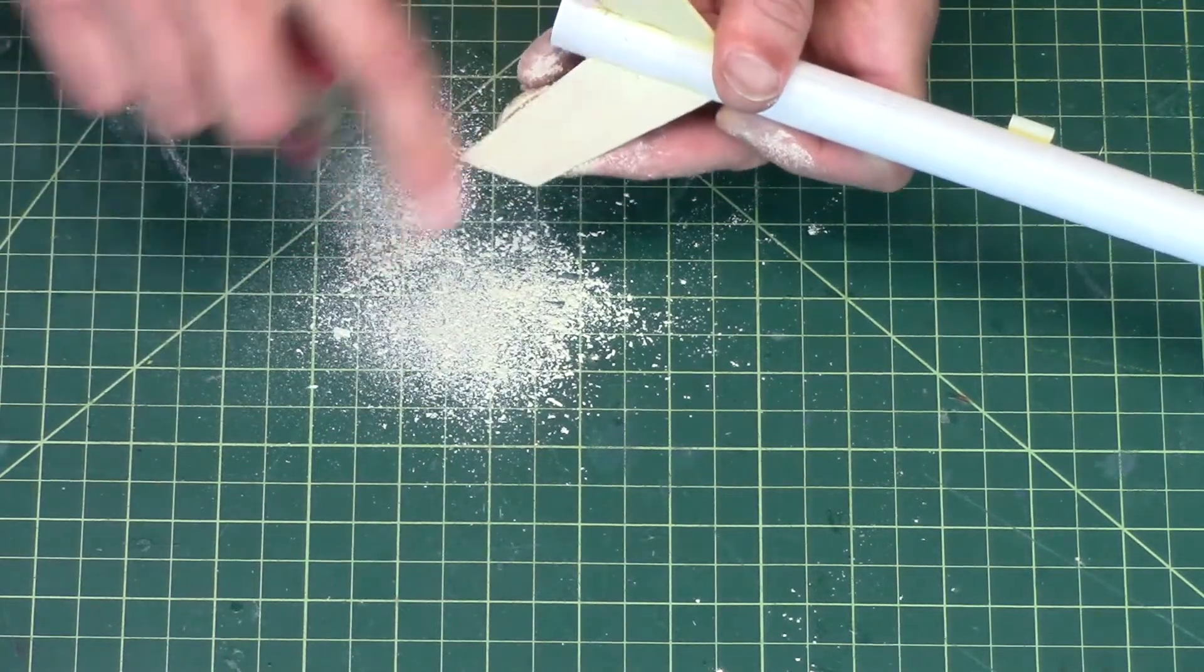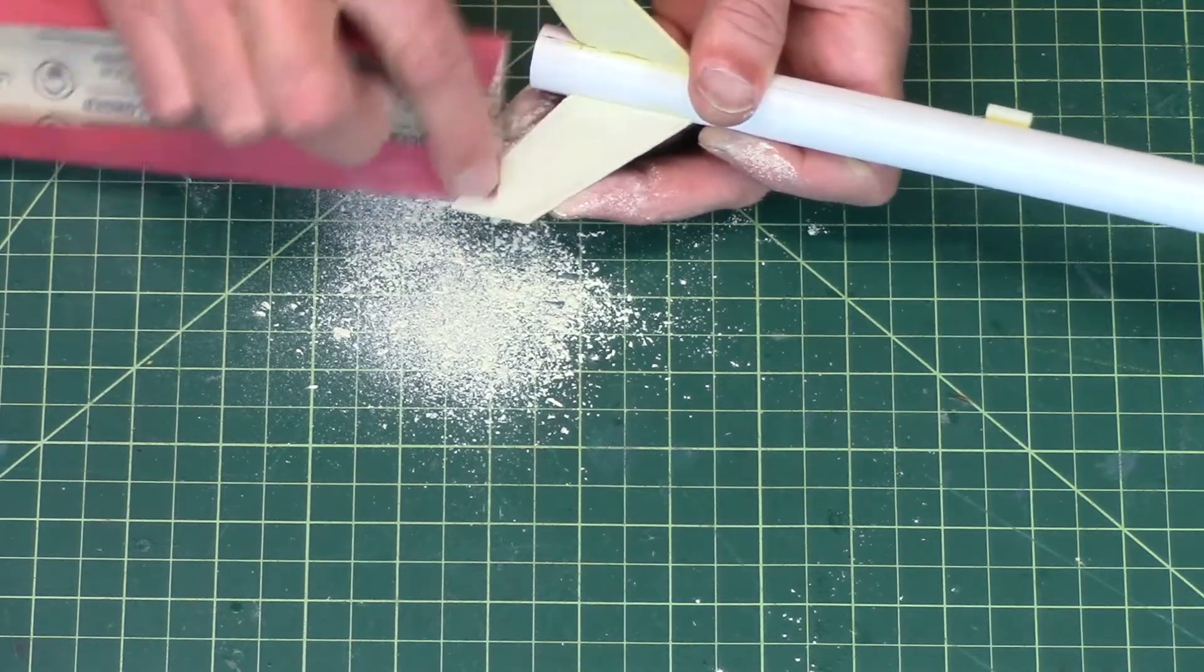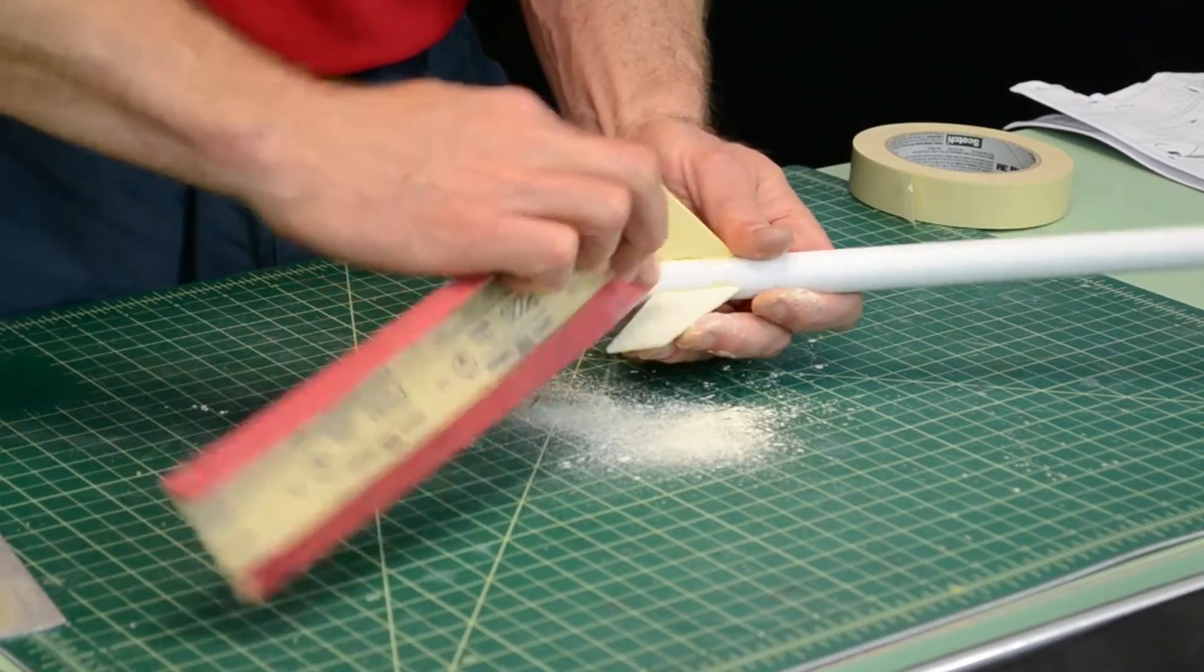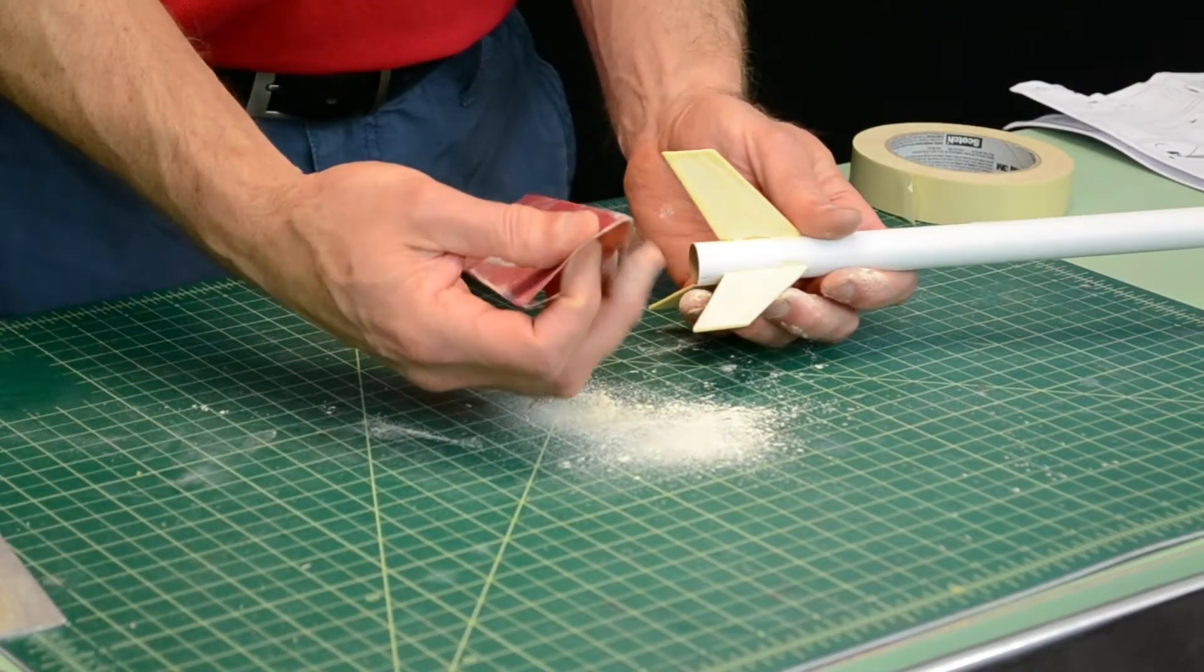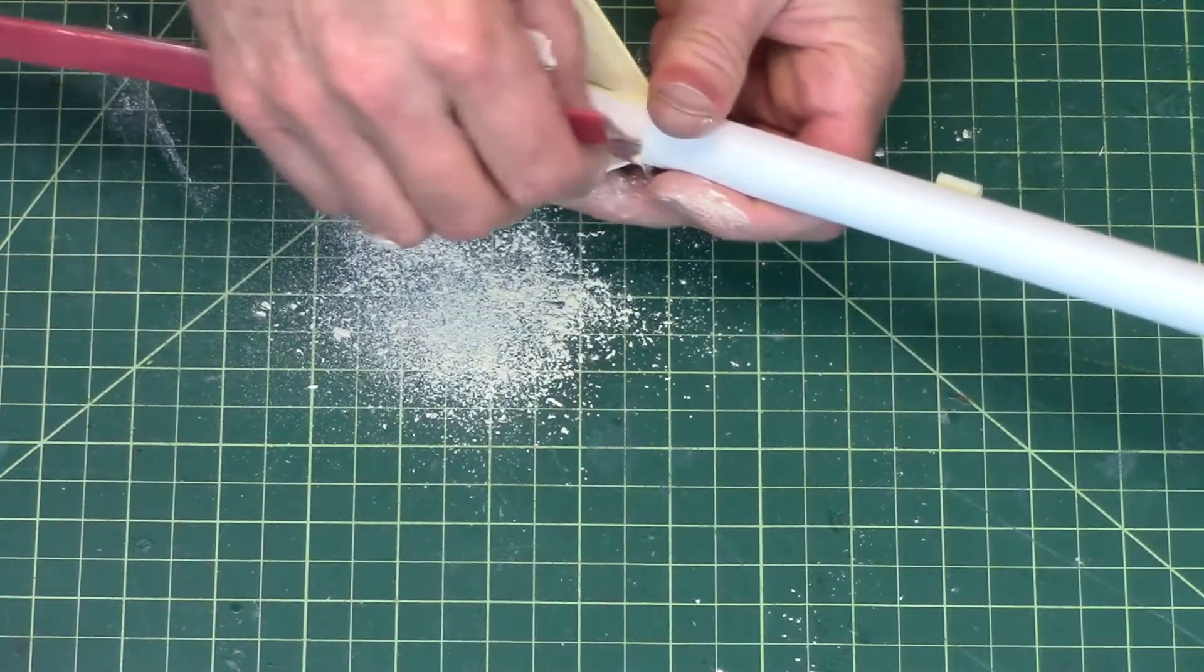You can see I'm using a nice little circular motion. And I folded the sandpaper here on the edge to get into that corner and you'll want to do that too.